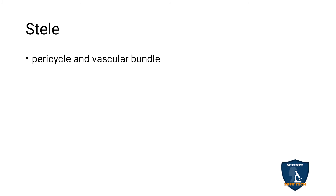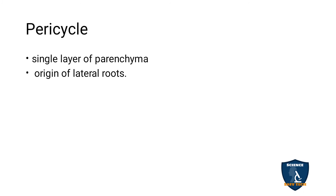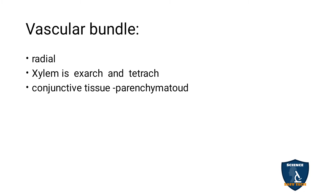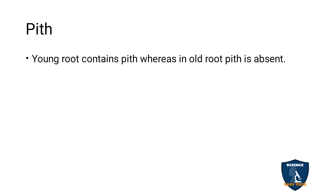Stele: made up of pericycle and vascular bundle. Pericycle: single layer of parenchyma cells; lateral roots originate from pericycle. Vascular bundle: arrangement is radial, xylem is exarch and tetrarch; conjunctive tissue is made up of parenchyma. Pith: in young dicot roots pith is present, but in old and mature roots the pith is absent.